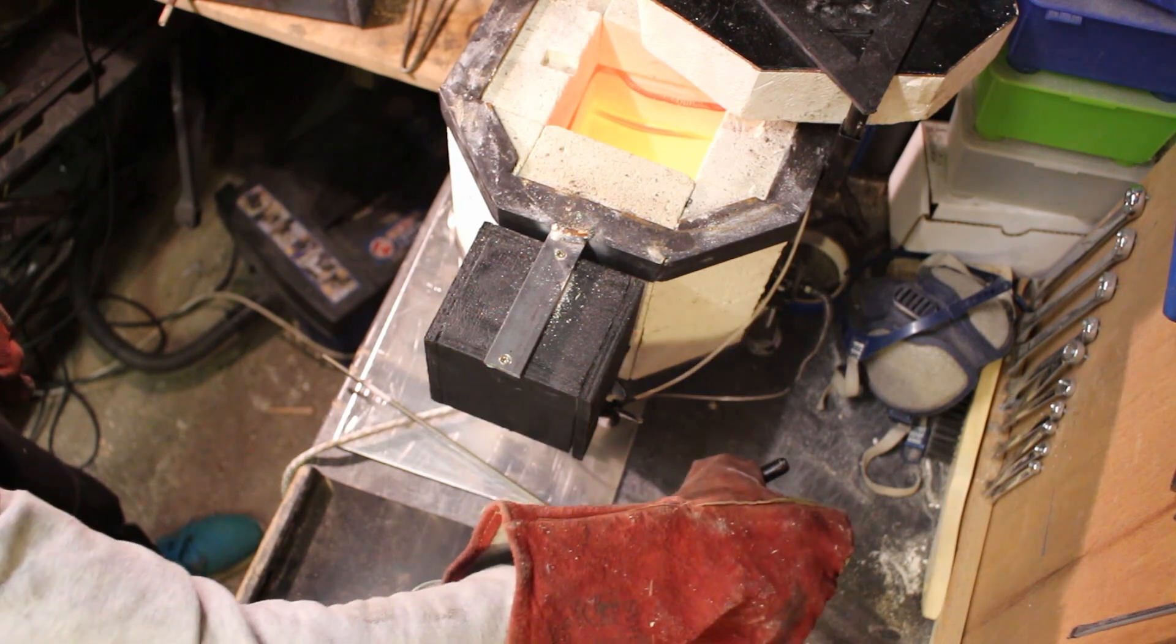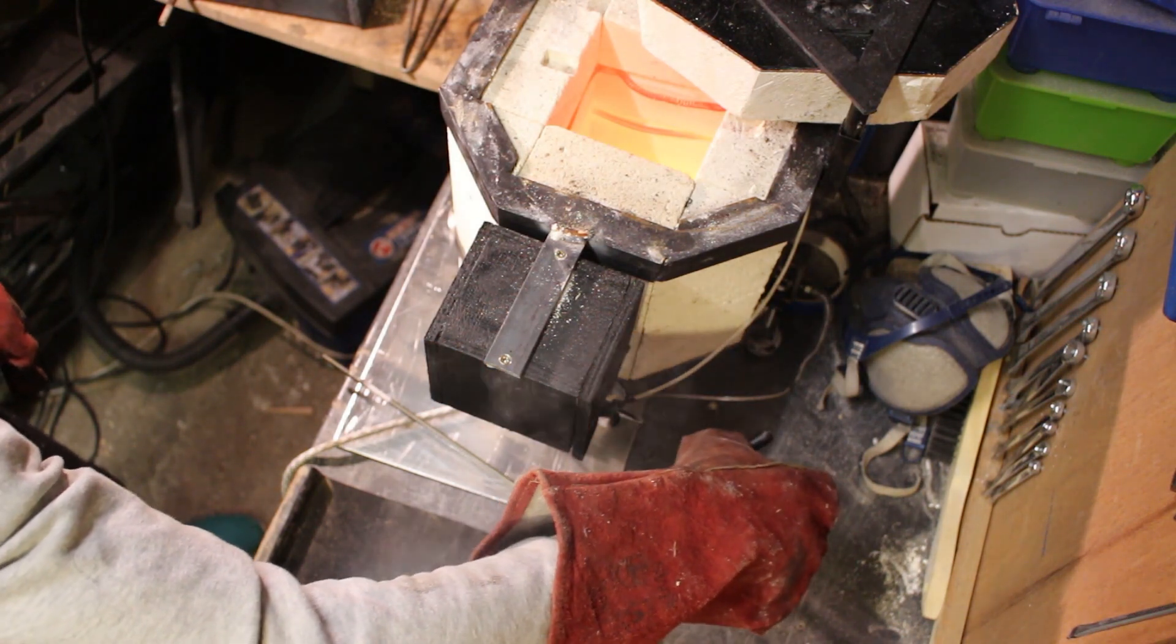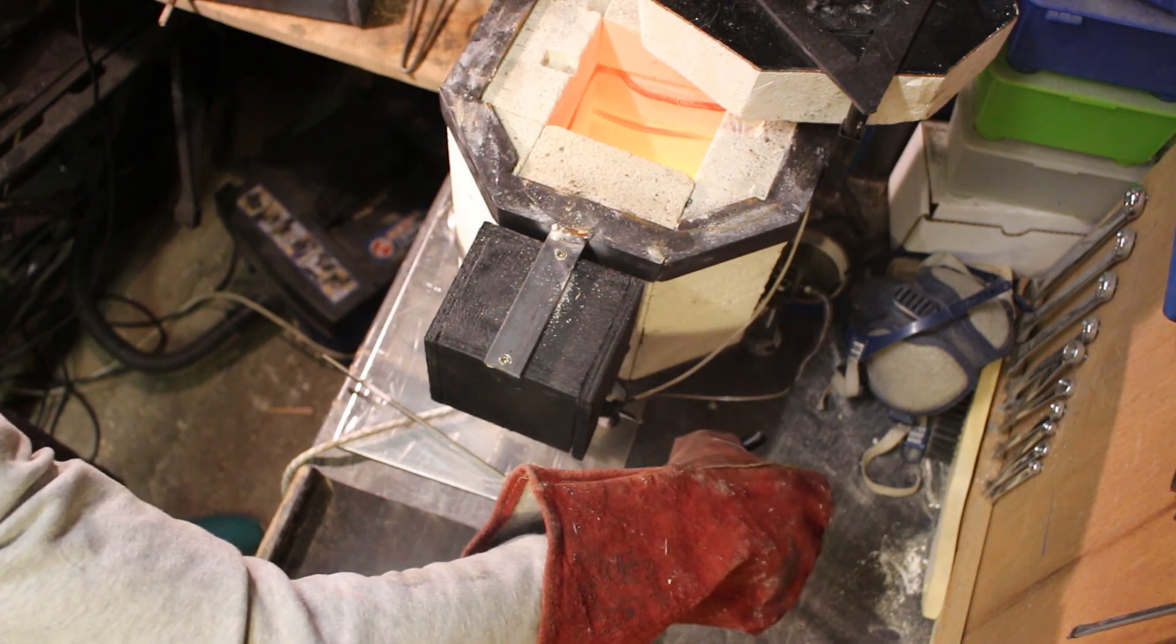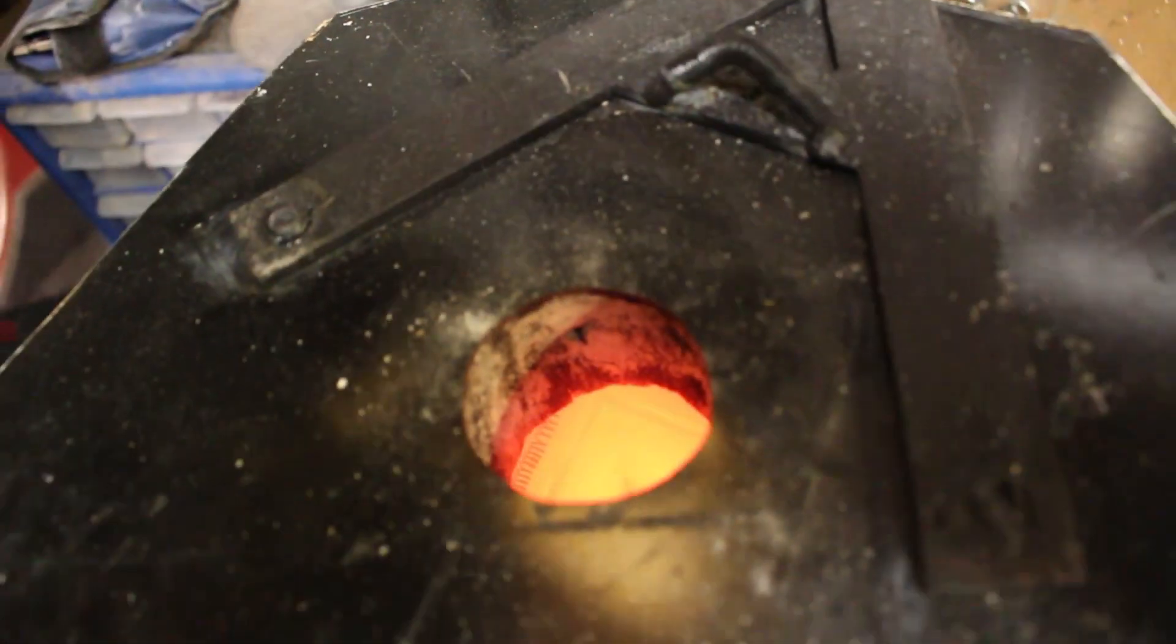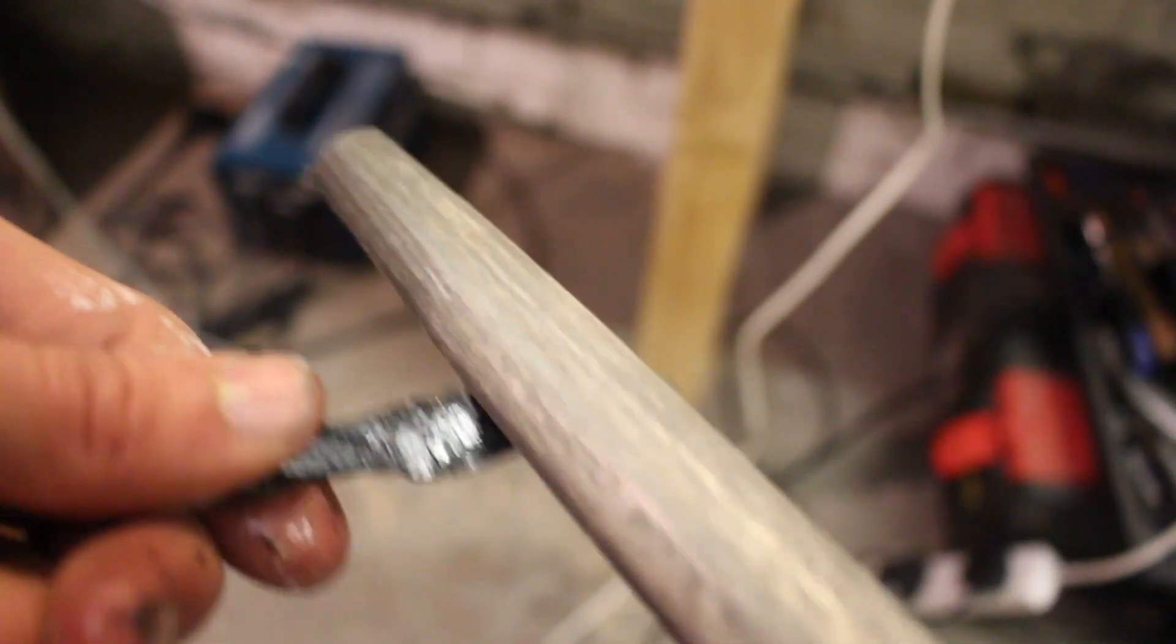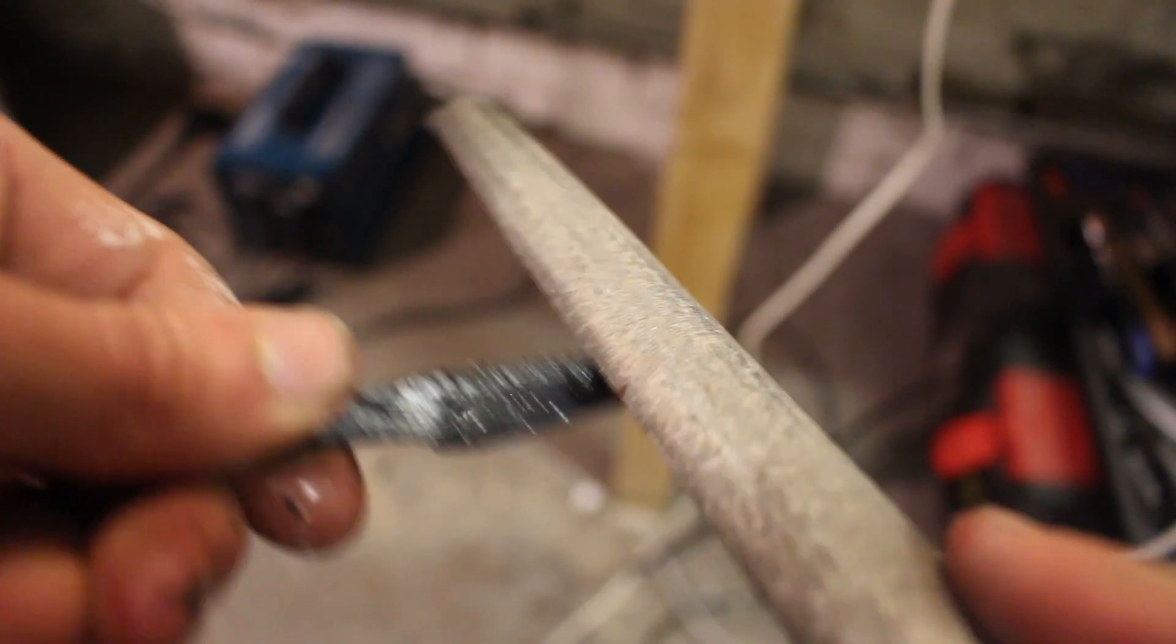I'm just using some natural sunflower oil but lots of different types of oil can be used. Unfortunately my hand sort of got in the way so you can't really see this. As you can see once I take it out of the oil it passes the file test and a file simply skates straight over the top of it. This means it is really hard.